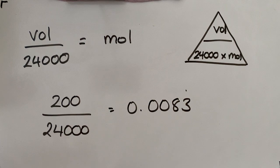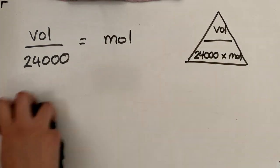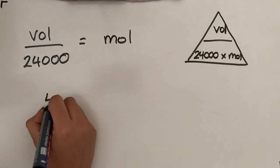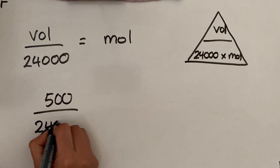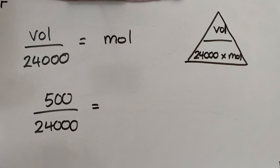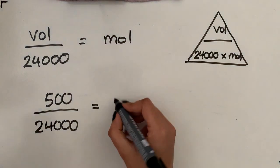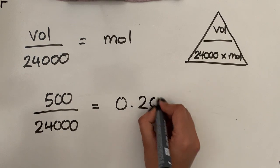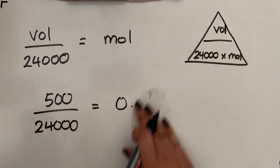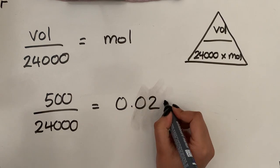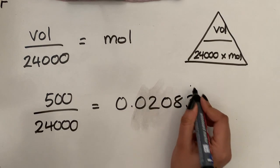It doesn't say anything about significant figures, so you can just leave it as that. Going on to question number two, you've got 500 centimeters cubed of ammonia. So all you do is the volume is 500. Divide that by 24,000 and that gives us 0.02083 recurring.